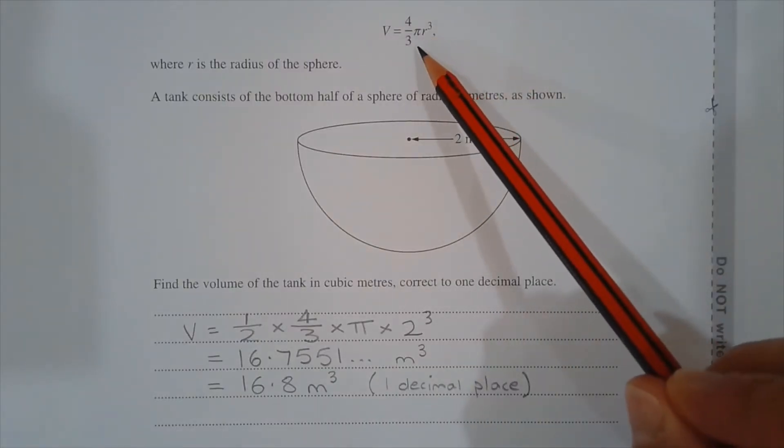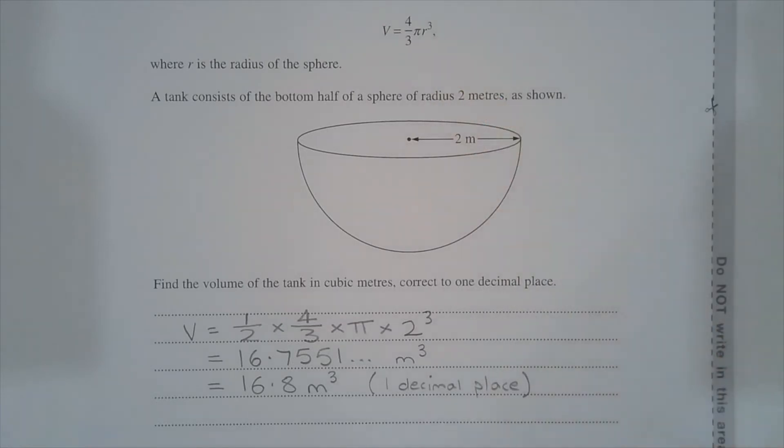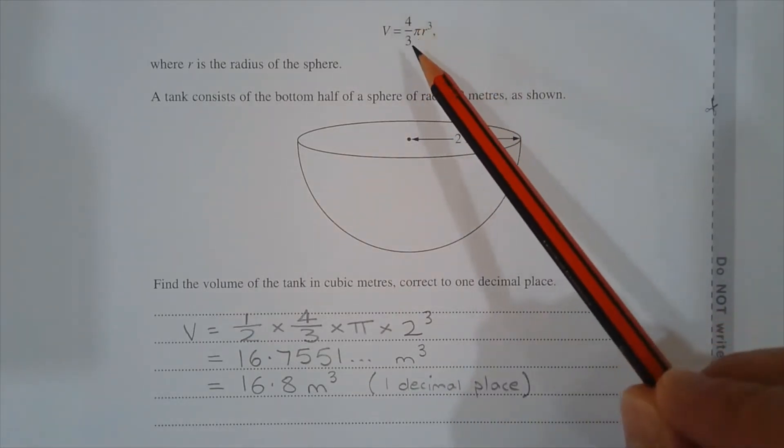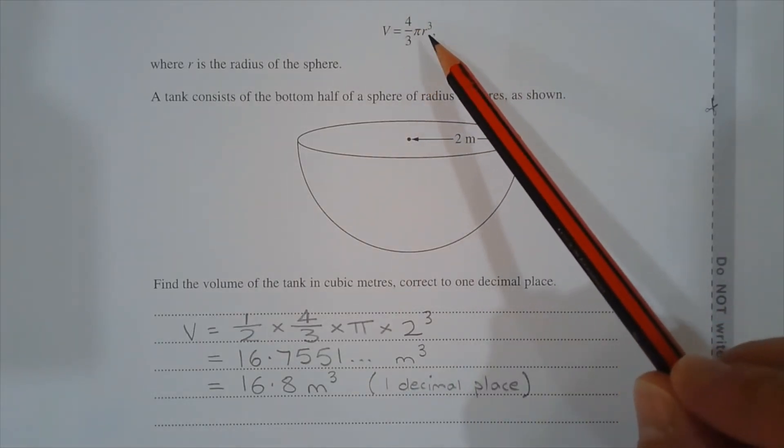The formula 4 over 3 multiplied by pi multiplied by r cubed gives the volume of a sphere. To find the volume of a hemisphere or half a sphere, it's half multiplied by 4 over 3 multiplied by pi multiplied by r cubed.